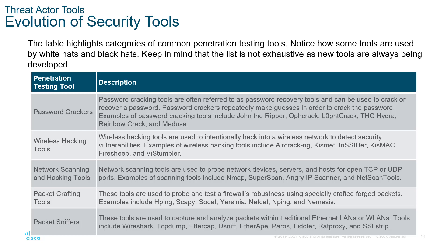There are also rainbow tables that look up hashes of passwords to identify the password via its hash. Wireless tools include Aircrack-ng, which is probably the most common wireless hacking tool. Network scanning tools — Nmap is by far the biggest. Packet crafting tools include Netcat, Nping, Scapy, and Hping. Sniffers include Wireshark, tcpdump, and Fiddler.